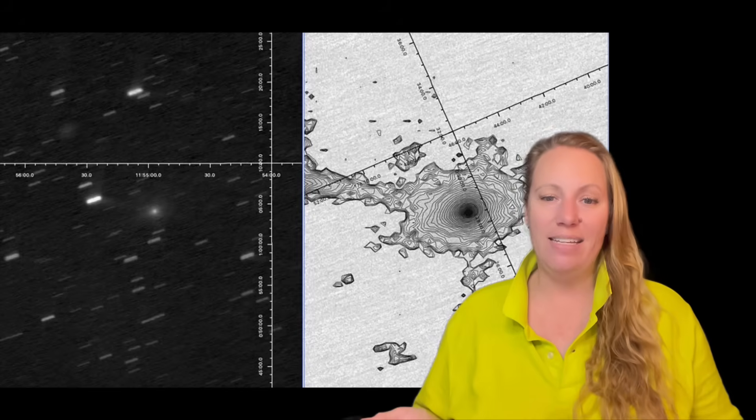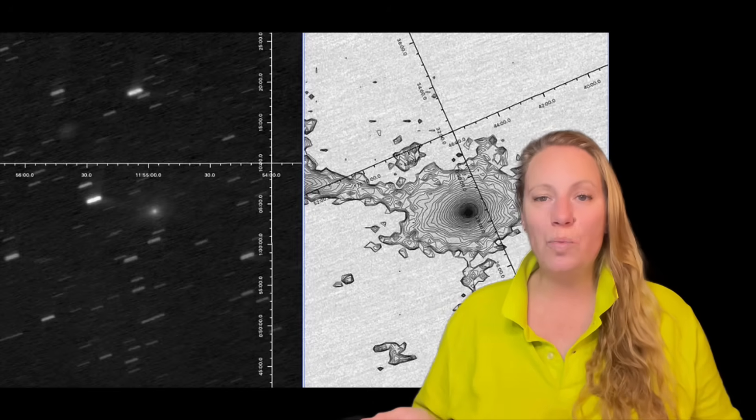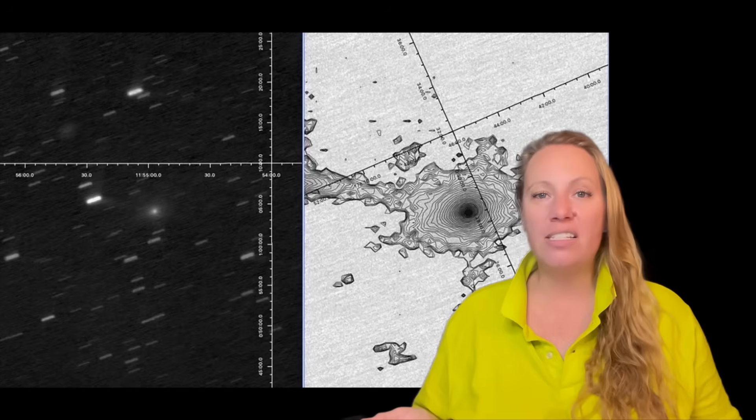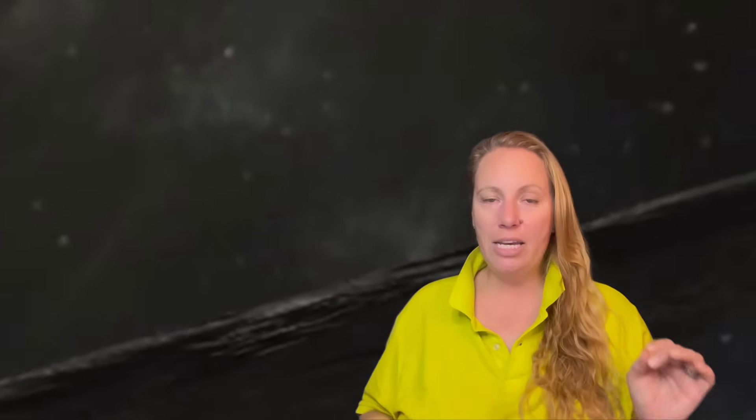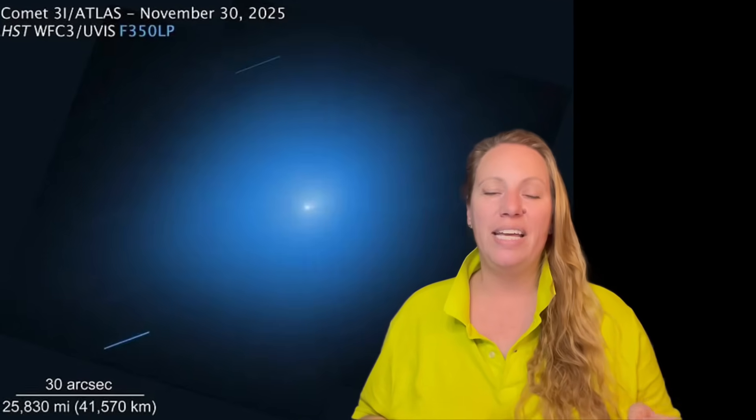If you're an alien entity and you want to come undetected, that's probably what you would do. Or it could be a black swan - so rare and unexpected that we're not ready for it. We're just not ready. In short, we shouldn't assume it's harmless just because it looks like a comet. Its behavior is too strange to ignore because what we don't know about 3I/ATLAS makes it dangerous or exciting.